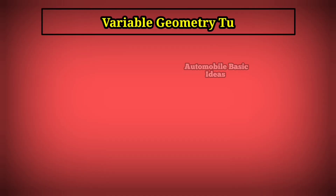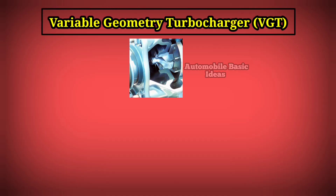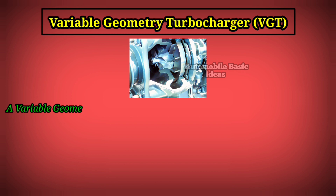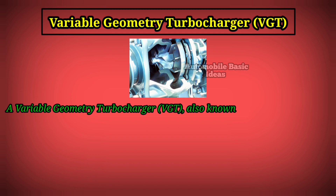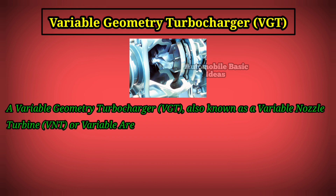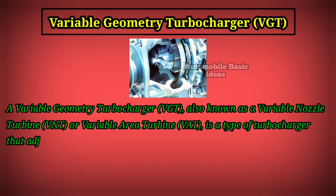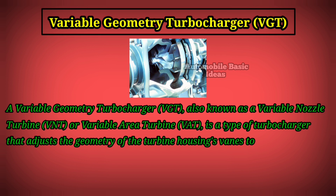Variable Geometry Turbocharger (VGT). A variable geometry turbocharger, also known as a variable nozzle turbine (VNT) or variable area turbine, is a type of turbocharger that adjusts the geometry of the turbine housing's vanes to optimize the flow of exhaust gases and improve overall engine performance.